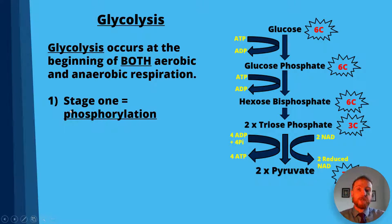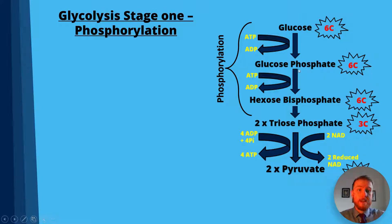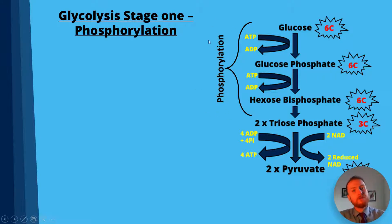There are two stages: stage one is phosphorylation and stage two is oxidation. In phosphorylation, glucose is converted into glucose phosphate using a phosphate from ATP, so ATP has gone to ADP. Next, glucose phosphate is converted into hexose bisphosphate — 'bi' meaning two, like a bicycle having two wheels, so bisphosphate has two phosphates — and again ATP goes to ADP.